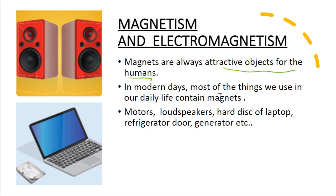We know that magnets are attractive objects for humans. Almost everyone can play with a magnet. In modern days, most of the things we use in our life contain magnets — laptops, mobile phones, refrigerators, loudspeakers, motors, generators. Magnets are an important element in all of them. The title of this unit is Magnetism and Electromagnetism, which describes the relationship between electricity and magnetism.